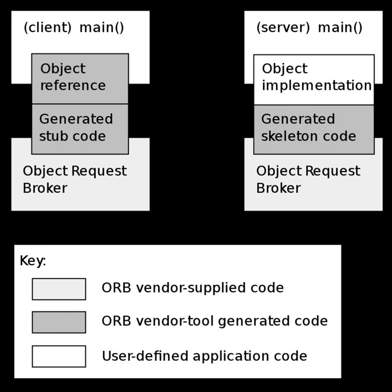The CORBA component model is an addition to the family of CORBA definitions. It was introduced with CORBA 3 and describes a standard application framework for CORBA components. Though not dependent on Enterprise Java Beans, it is a more general form of EJB, providing four component types instead of the two that EJB defines. It provides an abstraction of entities that can provide and accept services through well-defined named interfaces called ports. The CCM has a component container where software components can be deployed. The container offers a set of services including notification, authentication, persistence, and transaction processing, dramatically reducing the complexity of the components.